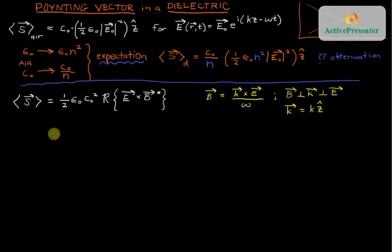If we just look at the next line of this expression and we substitute in for B complex conjugate, we still have this one-half epsilon-not C-not squared out there. And we get that triple cross product: E cross K star, K complex conjugate, cross E complex conjugate over omega.